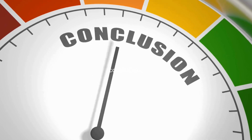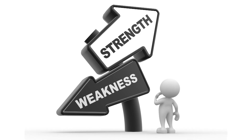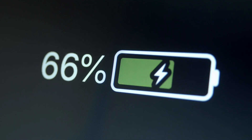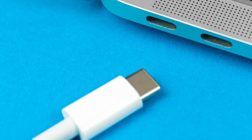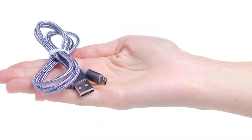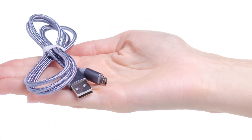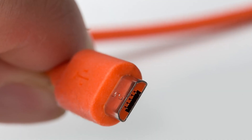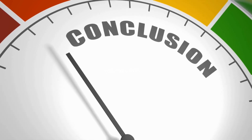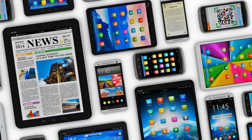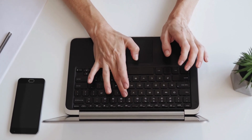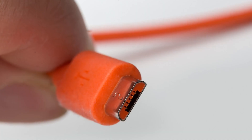In conclusion, both USB-C and micro USB have their strengths and weaknesses. USB-C offers faster data transfer speeds, higher power delivery, and a reversible design, making it ideal for modern devices. On the other hand, micro USB is widely compatible and still prevalent in many older devices. When choosing between USB-C and micro USB, consider the specific requirements of your devices and prioritize factors like data transfer speeds, power delivery, and future compatibility. We hope this video has provided you with a better understanding of USB-C and micro USB.